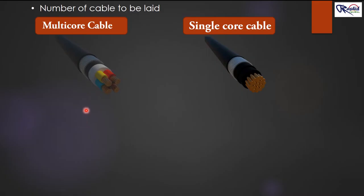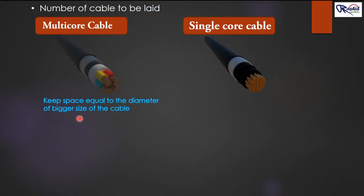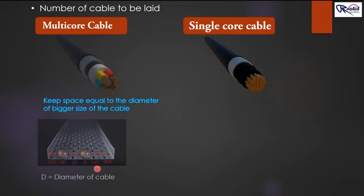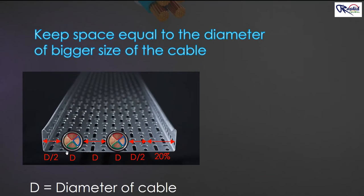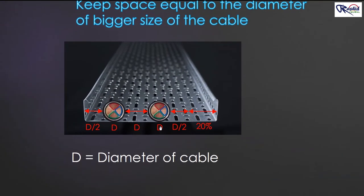The thing we need to keep in mind while calculating the proper size of tray is space — space between cable to cable. For multi-core cable, we keep the space between cable to cable equal to the diameter of the bigger size cable. Here, D is the diameter of the cable. Since both cables have the same size and same diameter, we keep space between cable to cable equal to D. The space between the cable and the flange of the tray is equal to half the diameter, that is D/2, on both sides. Then we keep 20 percent space for future use.